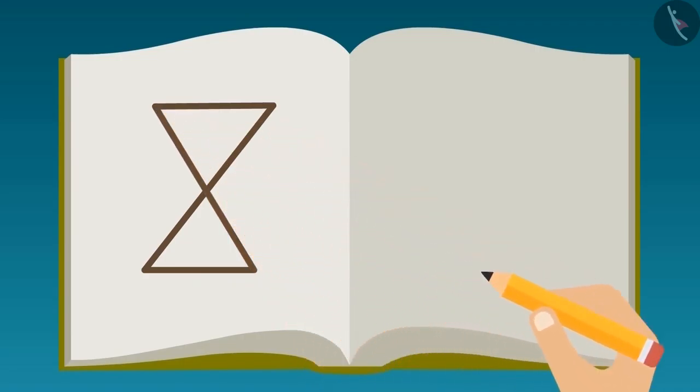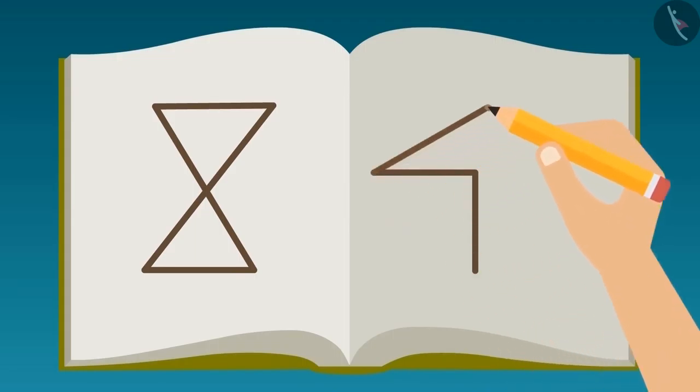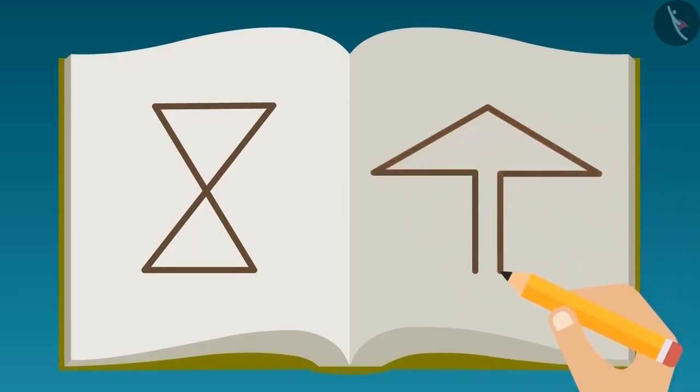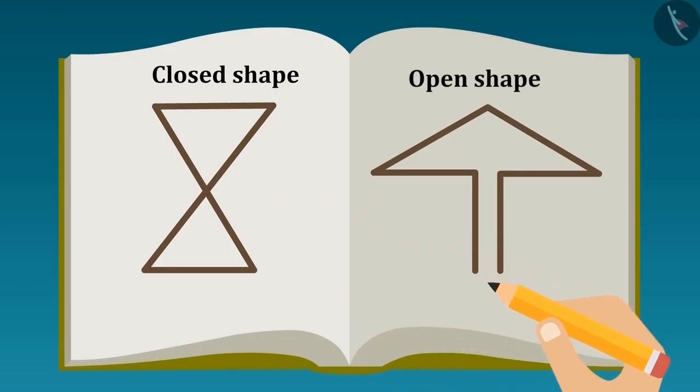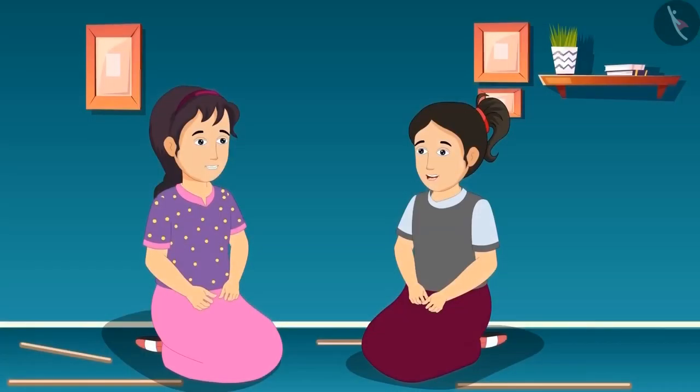But if I draw this shape, then the point where I am beginning to draw it is different from the point where I am ending it. That's why it is a closed shape and this is an open shape. Really? I never thought about this, sister.